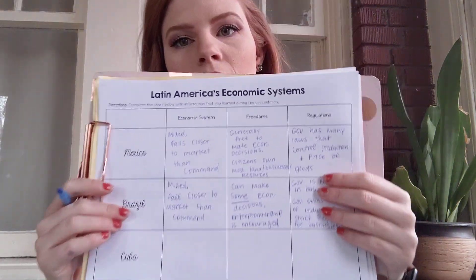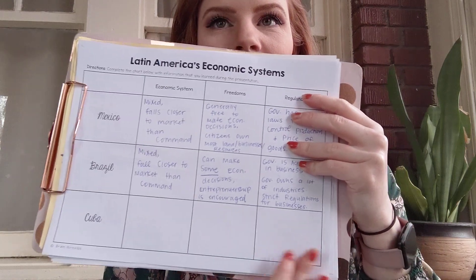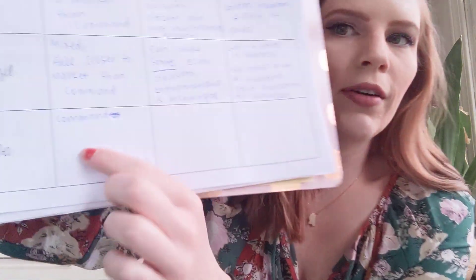Lastly, we're on Cuba. No country is 100% command, but Cuba is very close. We're going to write 'command' — they are not close to mixed and definitely not close to market. Market means you can own and operate your own business however you want, and citizens cannot do that in Cuba. So for the economic system box we write 'command.'